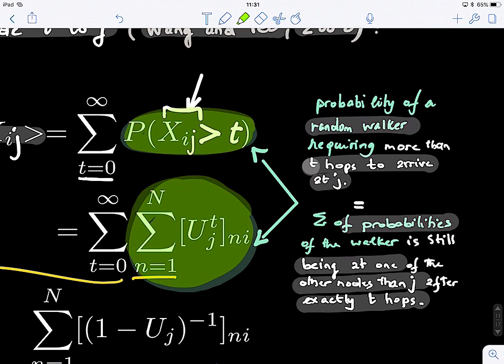It makes sense, right? If you read it, it makes sense. So it means like, I have still not reached my node j, that's what it means. Like in t hops, I'm still somewhere else. I still need, which means I need more than t hops to reach j. So it's very intuitive.